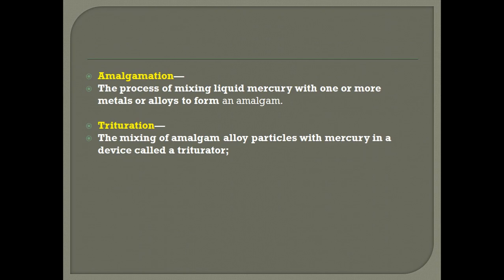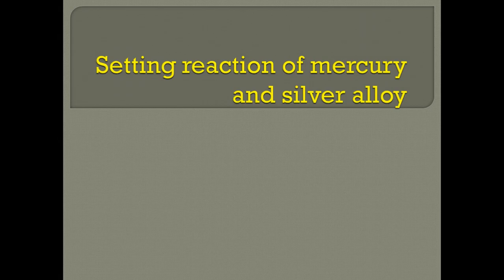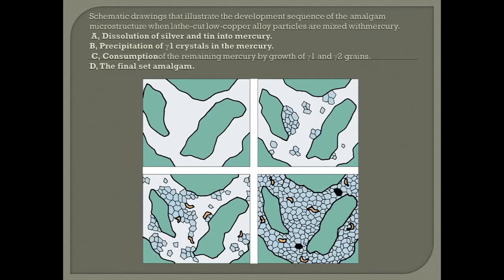Amalgamation is a process of mixing liquid mercury with one or more metal alloys to form an amalgam. Whereas trituration is mixing the amalgam alloy particles with mercury in a device called a triturator. Once trituration occurs, the mercury amalgam that is formed will start to set.